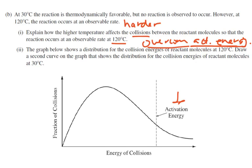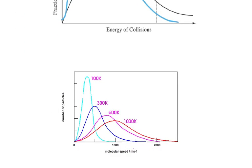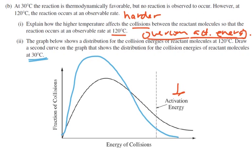The graph shows the distribution of collision energies of reactant molecules at 120 degrees. We need to draw a second curve showing the distribution at 30 degrees. This is a horizontal graph, not a vertical one. For a cooler sample at 30 degrees instead of 120, the curve gets squished to the left — higher on the left side and lower on the right. The area under the curve stays equal because it represents the same number of particles.